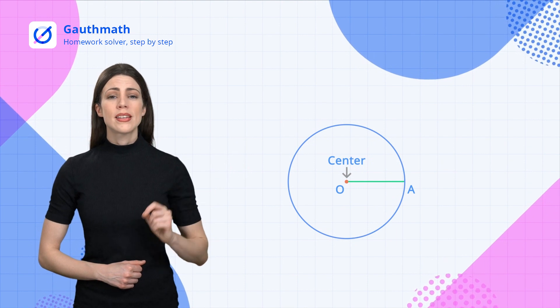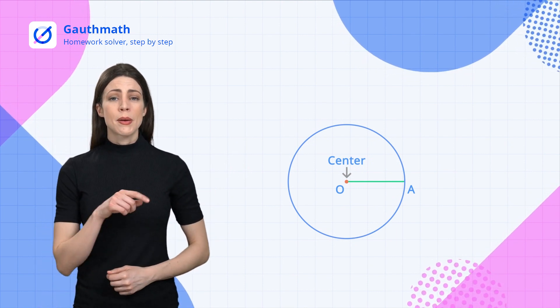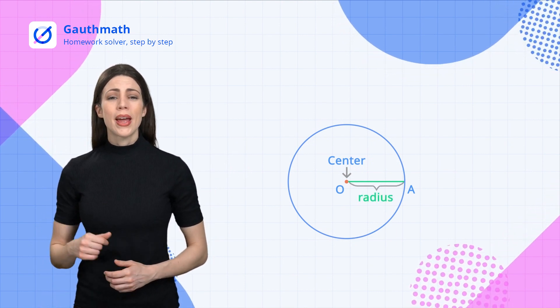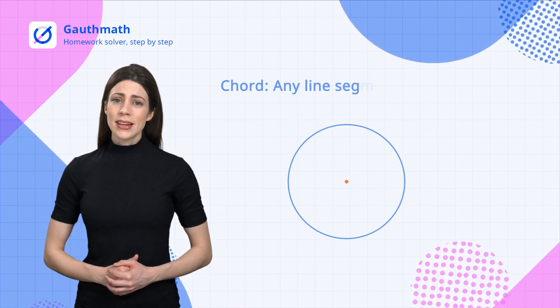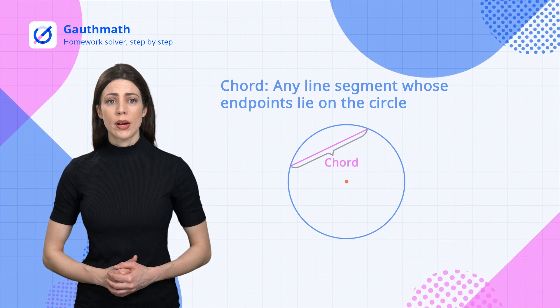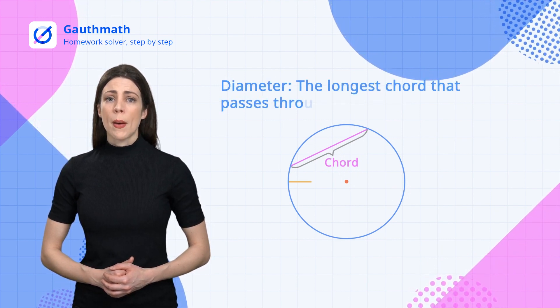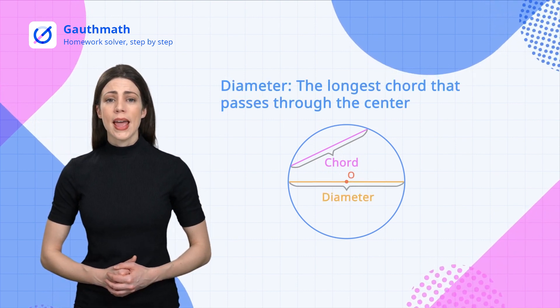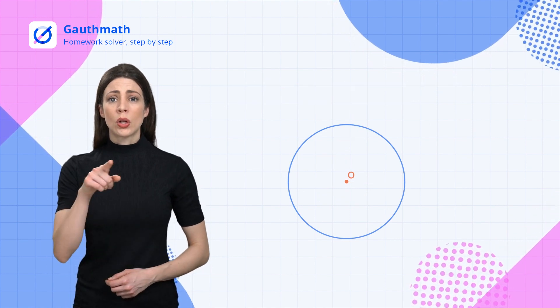Line segment OA is called the radius. Any line segment whose endpoints lie on the circle is called a chord. The longest chord that passes through the center is a diameter. In any given circle, a chord has its corresponding arc.